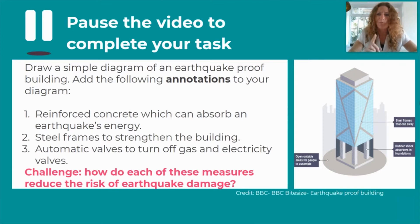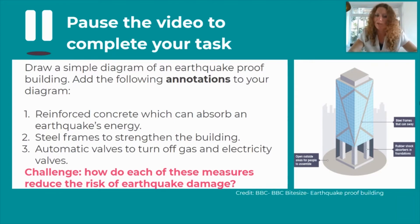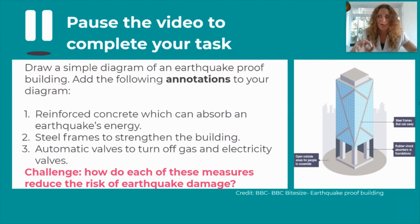Here's the challenge for today's session: for each annotation I want you to add an explanation of how that reduces the risk. What is it about reinforced concrete that lowers the risk for people in or around the building? What do the steel frames actually do? And why do they have valves to turn off gas and electricity? Pause the video, draw your diagram, add the annotations, and link them to how they protect people's lives.